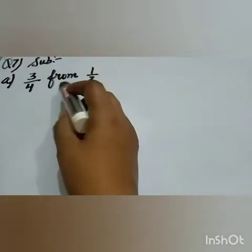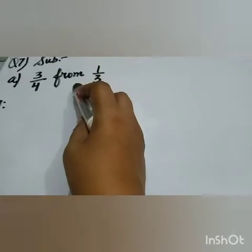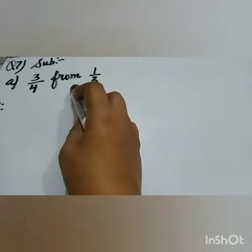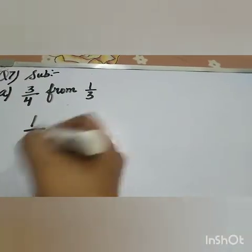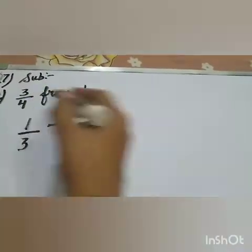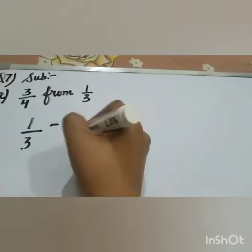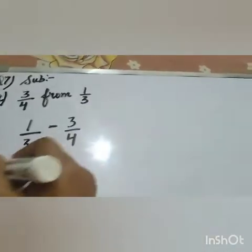When we have 'from' in a problem, as we've learned in previous classes, you have to subtract second number minus first. So you write 1 by 3 minus 3 by 4. That means second minus first.